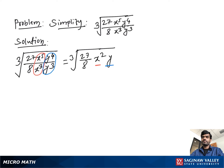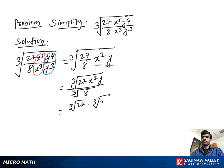Then we separate the cube root between numerator and denominator, writing cube root of 27x²y over cube root of 8. We then write cube root 27 times cube root x² times cube root y, over cube root 8, which is 2 because 2 times 2 times 2 is 8.